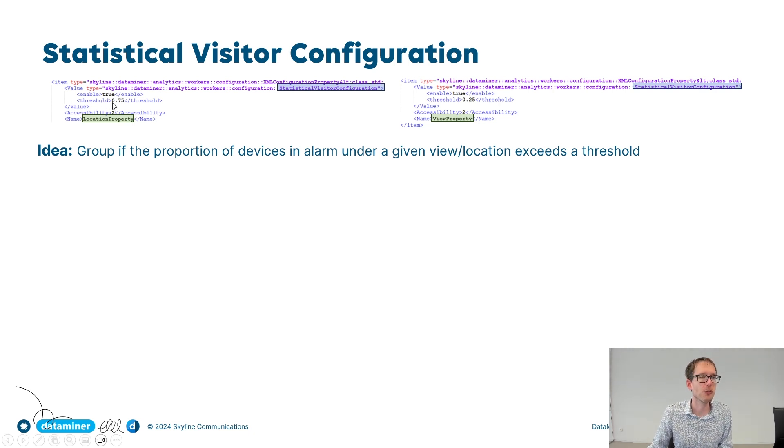If you set this threshold to 0.75, then we will group alarms on devices at the same location, but only if at least 75% of the devices in that location have problems. Else, we do not group.